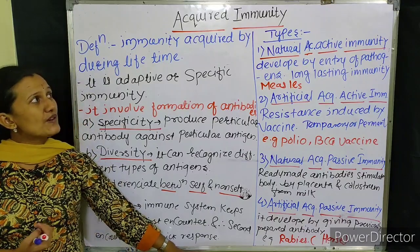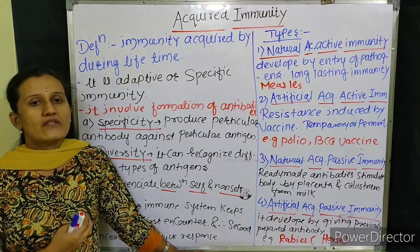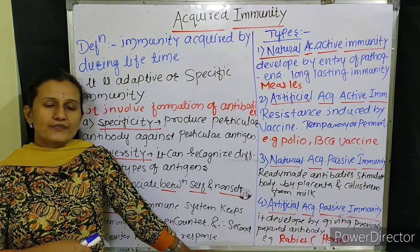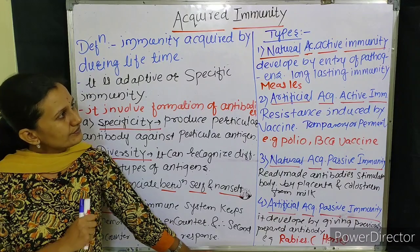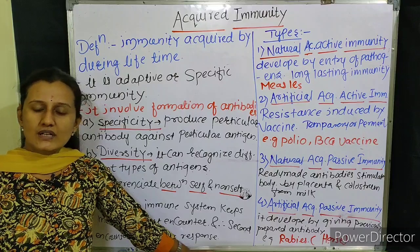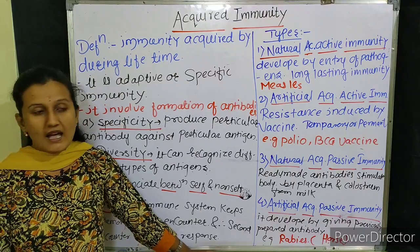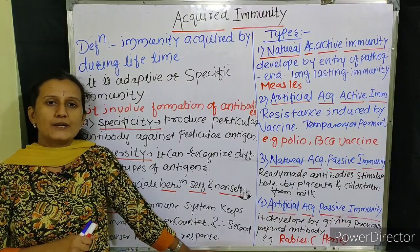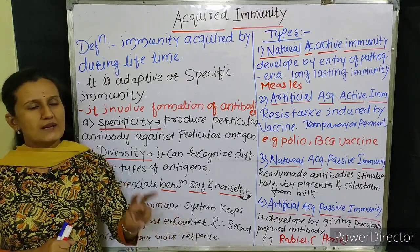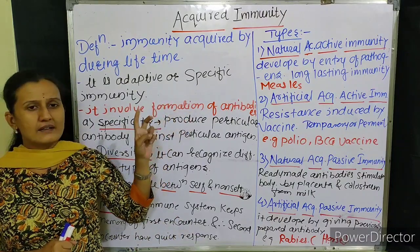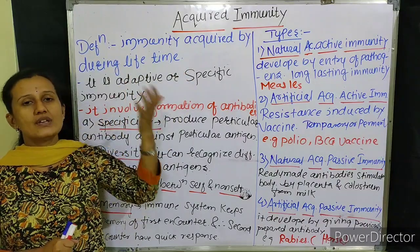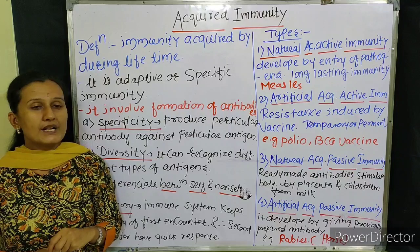These are the properties of acquired immunity. Now, what are the types of acquired immunity? Generally there are two main types of acquired immunity: active acquired immunity and passive acquired immunity. Active acquired immunity is developed only after the entry of a pathogen or antigen into the body. Passive acquired immunity is developed by giving ready-made antibodies.